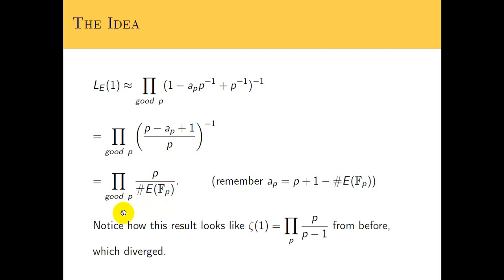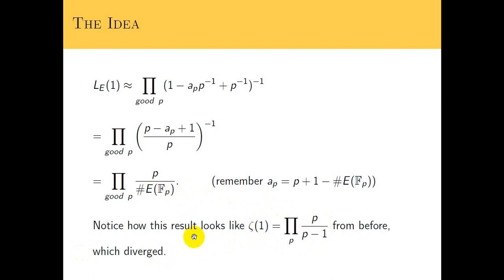And just to give a little connection here: the zeta function we defined before is P over P minus one. This is just to show that they look similar — there's always a correlation between the zeta function and the L-function for elliptic curves. They look very similar; they're both Dirichlet series and so forth.